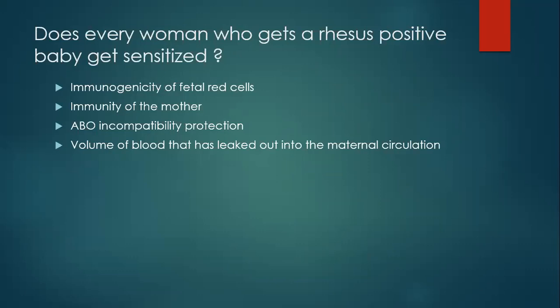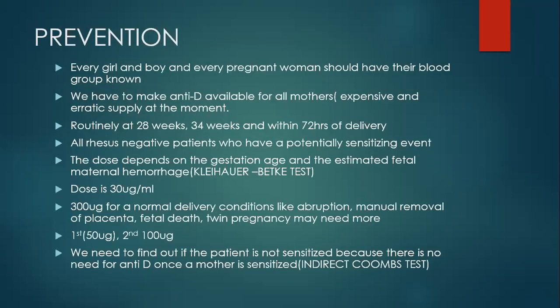Not every woman who experiences fetal-maternal hemorrhage gets sensitized — it depends on the woman's immunity, the immunogenicity of the mother, and whether the baby's ABO blood group is compatible. For instance, if the mother is O, she has antibodies against A and B in circulation. If the fetus is A and fetal-maternal hemorrhage happens, the ABO system is very immunogenic and the fetal red blood cells will be cleared from the circulation before the mother gets sensitized.